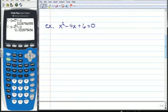Our next example, x squared minus 4x plus 6. It's already set equal to 0. In this one, a is 1, b is negative 4, and c is 6.